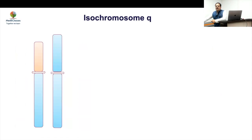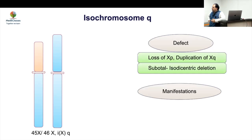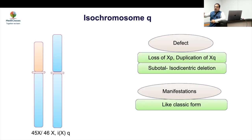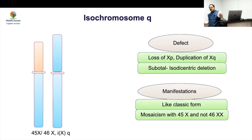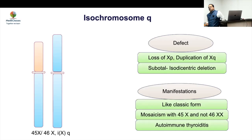Isochromosome Xq is essentially a deletion of the P arm and will behave like a P deletion, presenting more like the classical form because the P arm is the most important. When we say Turner syndrome diagnosis, loss of a part of P is the key indicator. Mosaic forms with X or XX lines may have milder manifestation, and there is a greater prevalence of thyroid disorder in isochromosome Xq cases.